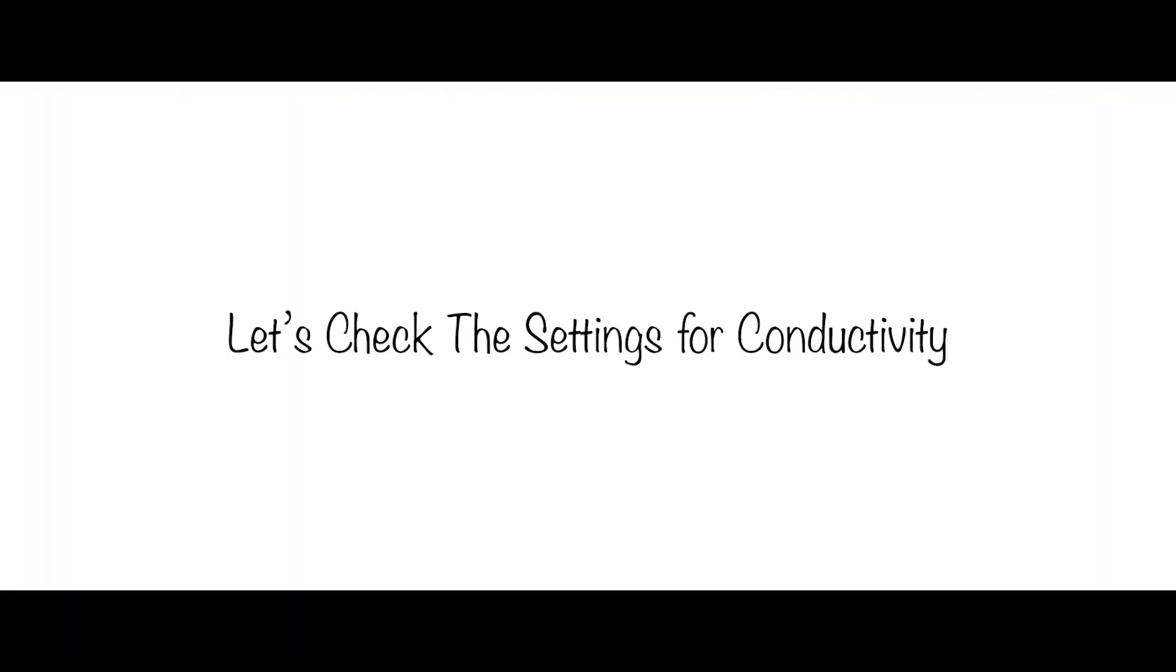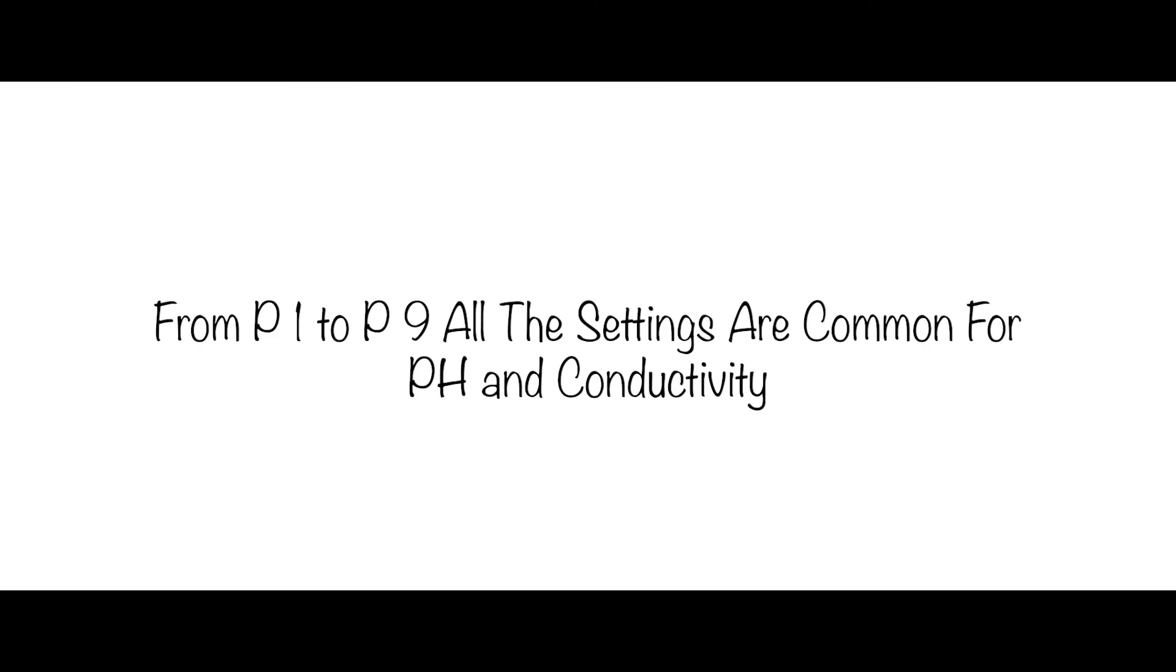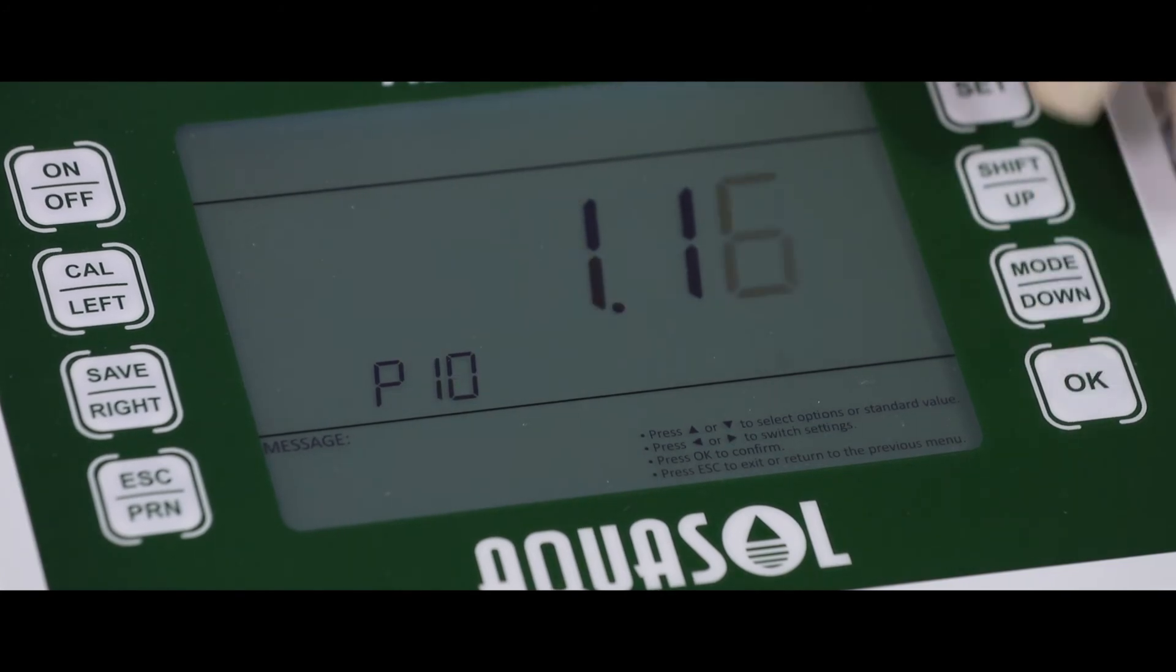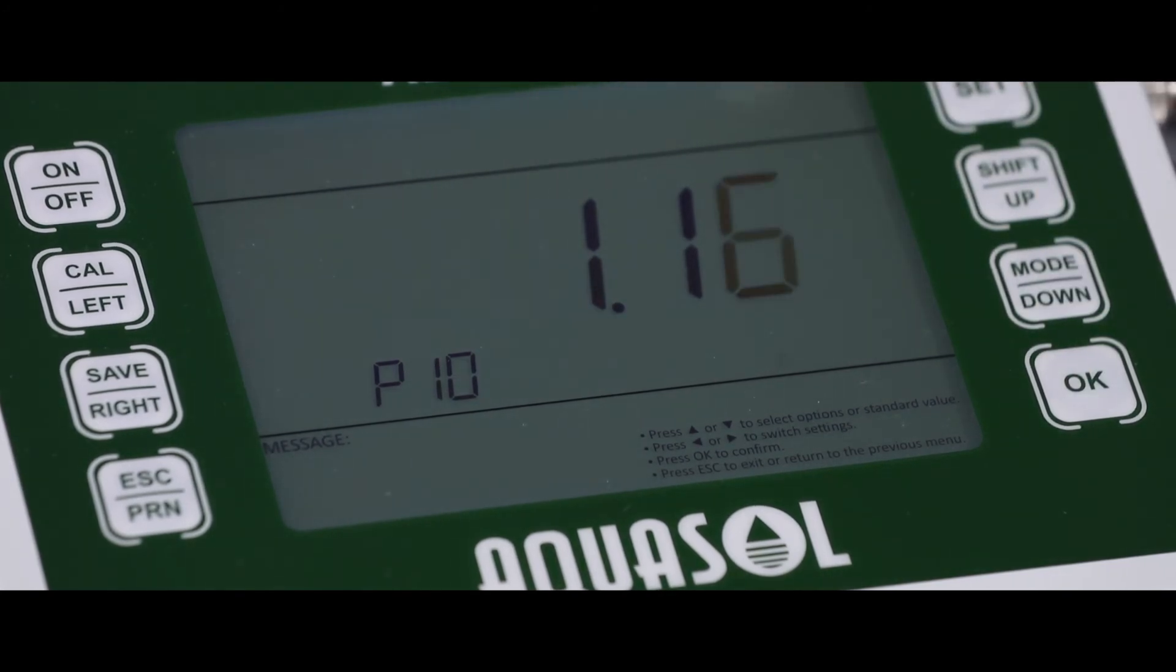For conductivity setting, change the mode to conductivity. From P1 to P9 is common for both the settings. P10, conductivity electrode coefficient value settings.